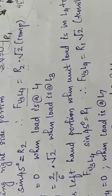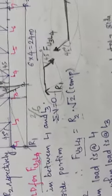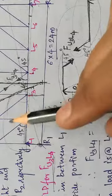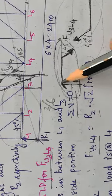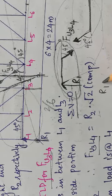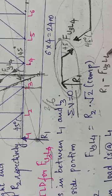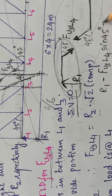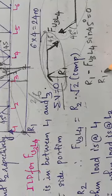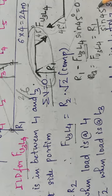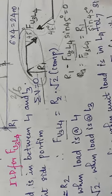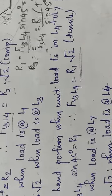Next, consider the load on the right-hand side. I take the left-hand side equilibrium. Summing vertical forces: R1 − F_U3L4 × sin45 = 0, so the force in U3L4 = R1/sin45 = R1√2, which is tensile in nature because both sides are positive. The ILD ordinate at L4 for R1 is 3/6, giving a force of (3/6) × √2.